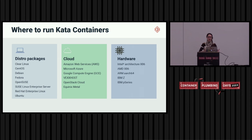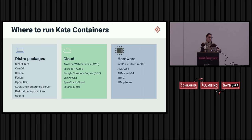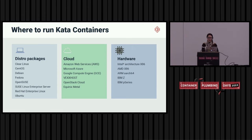Kata Containers can run just about anywhere. Major Linux distributions have packages for it, and you can also get the source code from GitHub. Kata Containers runs in private or public cloud environments — AWS, GCP, and Microsoft Azure — and on top of OpenStack, with Vexxhost as one OpenStack cloud provider example. Kata also supports a very diverse hardware platform environment.